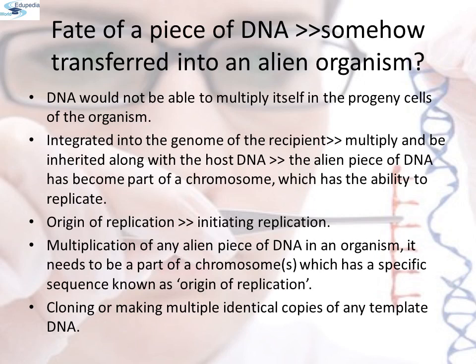In a chromosome, there is a specific DNA sequence called the origin of replication, which is responsible for initiating the replication. Therefore, the multiplication of any alien piece of DNA in an organism needs to be part of a chromosome which has a specific sequence known as origin of replication. Thus, an alien DNA is linked with the origin of replication so that these alien pieces of DNA can replicate and multiply in the host organism. This can also be called cloning — making multiple identical copies of any template DNA.